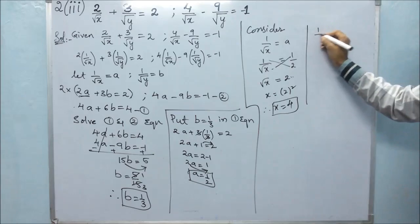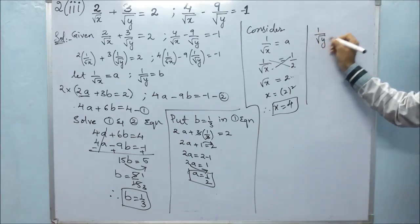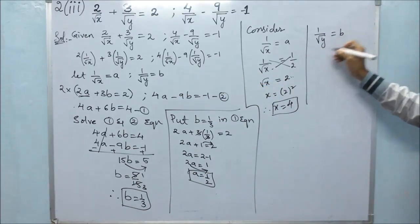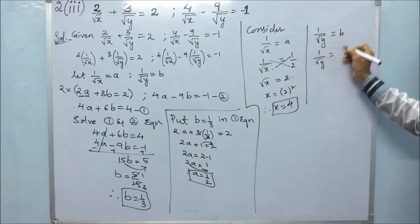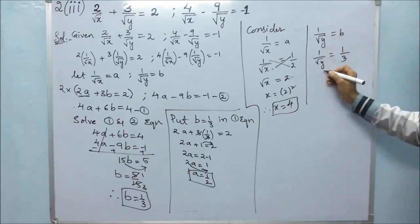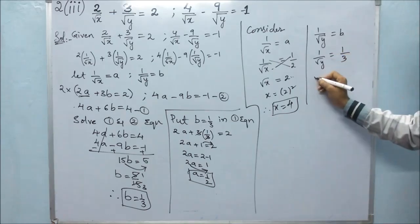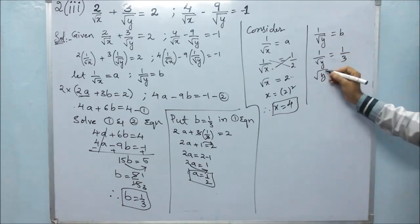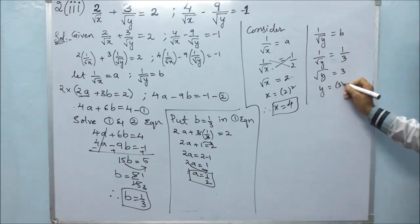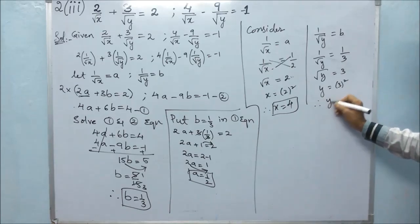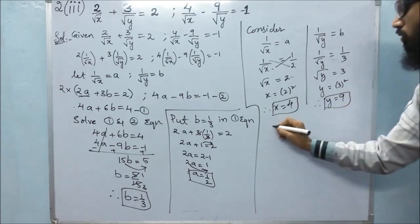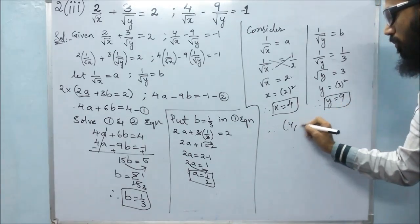Next, 1 by root y equals B. So root y equals B is 1 by 3. Cross multiplying, we get root y equals 3. Squaring both sides to remove the square root, y is equals to 3 squared, therefore y is equals to 9. So the solution is x equals 4, y equals 9.